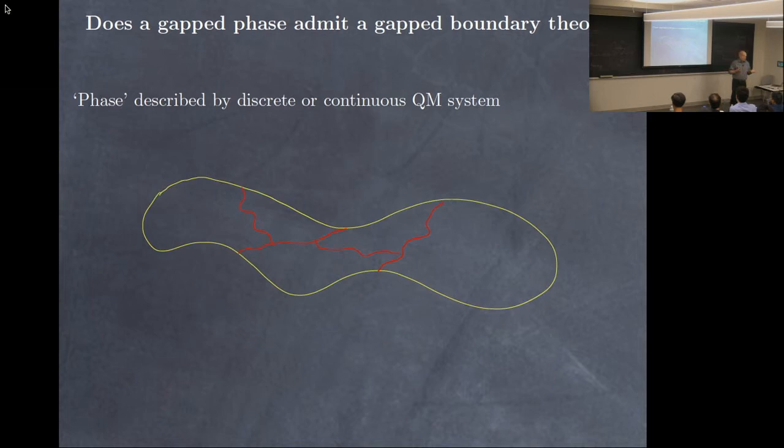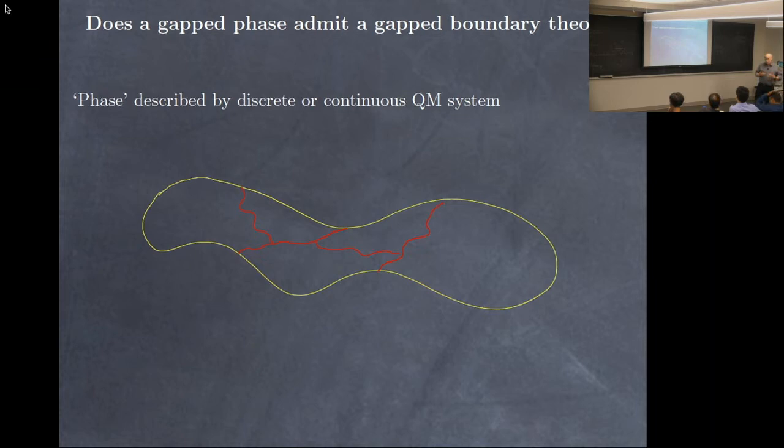A 'phase' here — the systems might be quantum field theories, lattice systems, stat-mec models, whatever. We can imagine a moduli space of phases of such. These are the phase transitions, and the path components of that are the phases. One first implicit heuristic is that the answer to the question only depends on the phase: if you take your gapped theory and move it staying within that equivalence class, the answer to this question doesn't change.